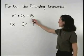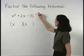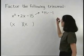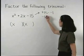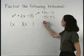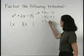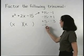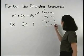So our negative 15 can be thought of as positive 15 times negative 1, or negative 15 times positive 1, or positive 5 times negative 3, or negative 5 times positive 3.